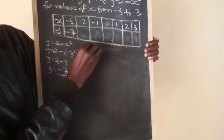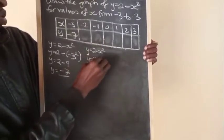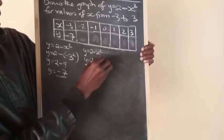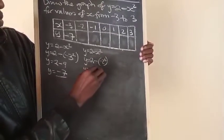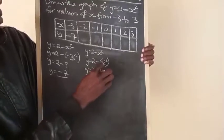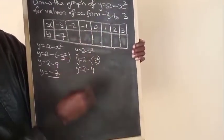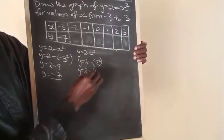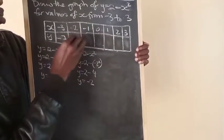Then the next one: y equals 2 minus x squared. Y equals 2 minus minus 2 squared. Then y equals 2 minus 4, because minus 2 squared equals plus 4. So y equals minus 2.